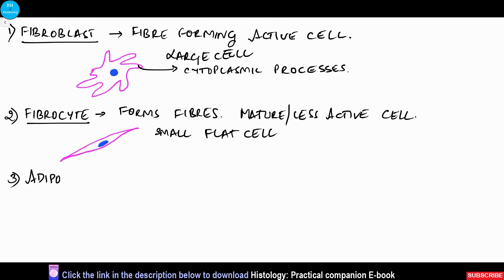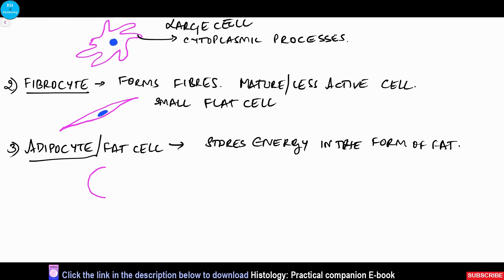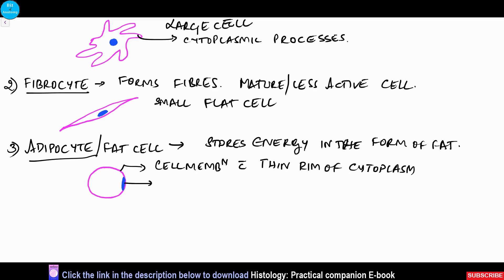The next type of cell is the adipocyte, or adipose cell, or fat cell. It stores energy in the form of fat, and wherever it is present in large amounts it is called adipose tissue. Each individual cell contains a peripheral thin rim of cytoplasm, a peripherally situated flat nucleus pushed to the side by a central fat globule. The entire appearance is ring-shaped, hence it is called signet ring appearance.